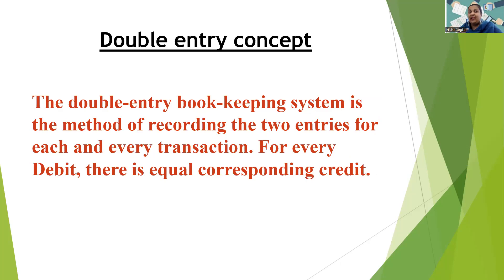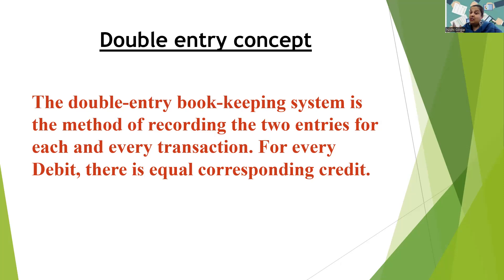Double entry concept. I touched on it when we were talking in accounting short number three, when discussing trial balance. Double entry concept basically means that when you record any transaction in accounts, you will record it in two different accounts. For each and every debit, there will be an equal and opposite credit. Each transaction will be recorded twice — two entries for each and every transaction. And that's why we said that the trial balance should always balance. If it doesn't balance, you need to go back and check for errors.